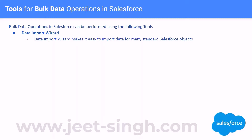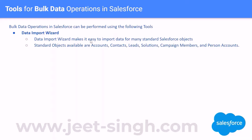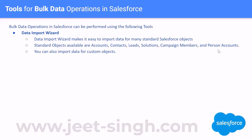This is not available for all standard objects — only a few are supported. The standard objects available are Accounts, Contacts, Leads, Solutions, Campaign Members, and Person Accounts. These are the objects supported on the Data Import Wizard. You can also import data for custom objects — all custom objects are supported. So if you need to import data into any of these objects, just go to the Data Import Wizard, launch the wizard, and start importing.